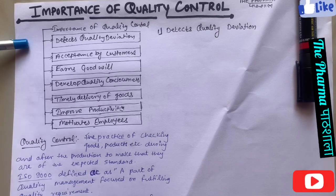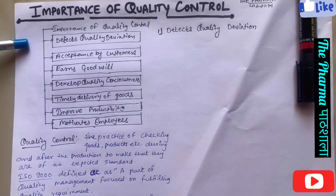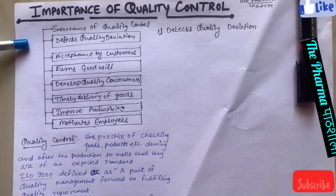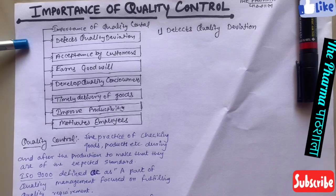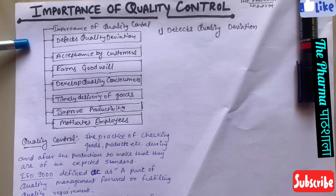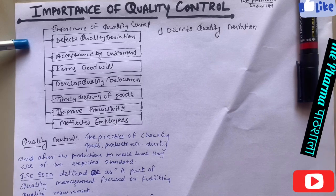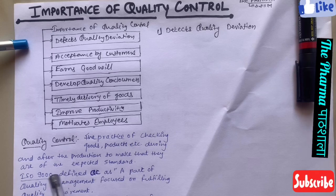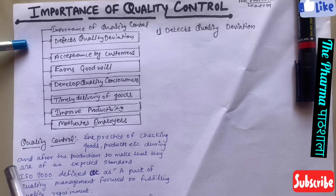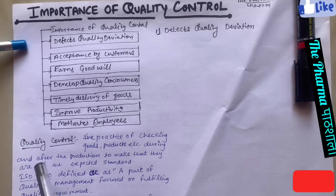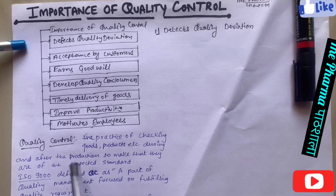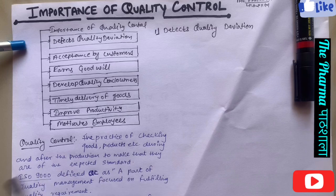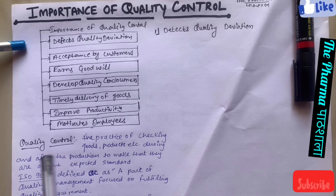Quality control को during process और after process check किया जा सकता है। During process का मतलब है जब आप कोई भी product बना रहे हैं तो उस दौरान उस product की quality बीच-बीच में check करते रहते हैं। After process क्या होती है — जब आपका final product बन करके आ गया है, then उसके बाद आप उसकी quality को check करते हैं कि क्या वो जो requirement थी उसको fulfill कर रहा है — उसे बोलते हैं after quality control test।